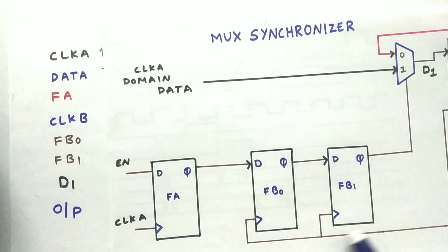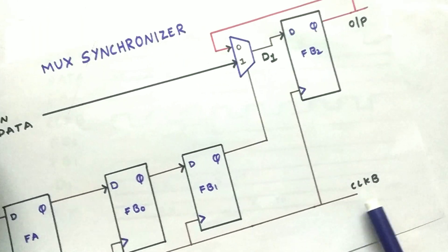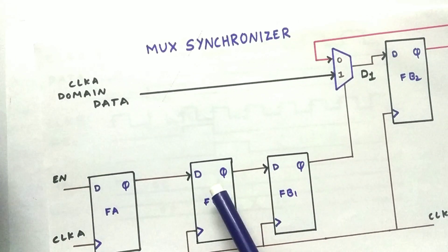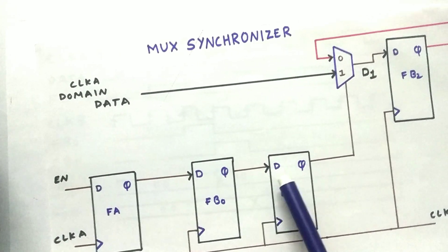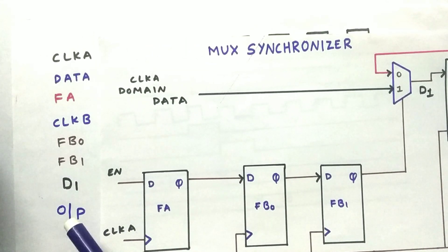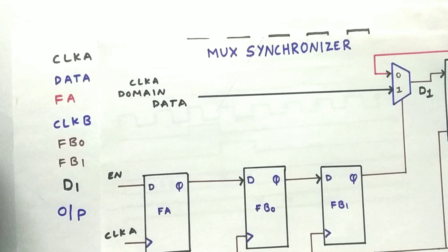FA is the output at Q of this flip-flop FA. And clock B, as you can see, is the another domain which we are converting to. Now FB0 and FB1 are the outputs of this flip-flop and this flip-flop respectively. And D1 is the output of the multiplexer and output is the required output that is the synchronized output.